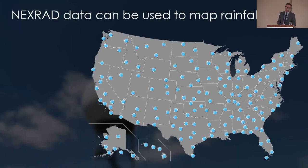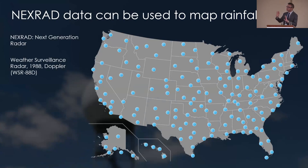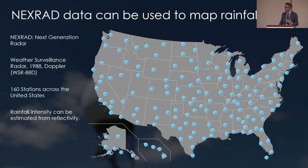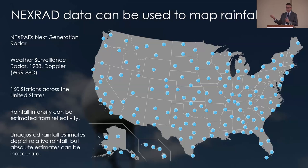NEXRAD stands for Next Generation Radar. It's a system by NOAA and the National Weather Service with 160 gauges around the country, providing good coverage for most areas. It's also referred to as the Weather Surveillance Radar or WSR-88D network. Rainfall intensity can be estimated by the reflectivity of radar from raindrops or water particles in the air. However, unadjusted rainfall estimates from radar alone don't tend to be accurate — they're good at spatial representation of rainfall intensity, but the absolute values may not be accurate.